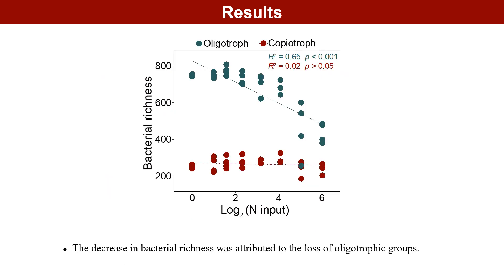According to previous studies, the reduction of bacterial network complexity is related to the reduction of bacterial richness. Through our research, we found that the decrease in bacterial richness was caused by the decrease in oligotrophic flora. The change of bacterial copiotrophic and oligotrophic flora is a characteristic of bacteria. Therefore, we speculate that changes in bacterial networks are related to changes in bacterial traits.